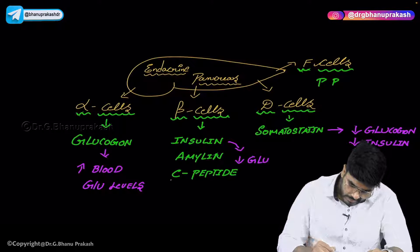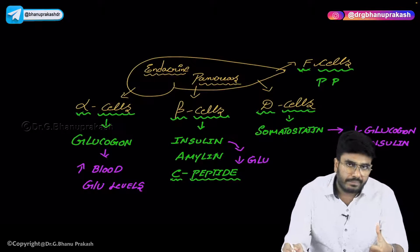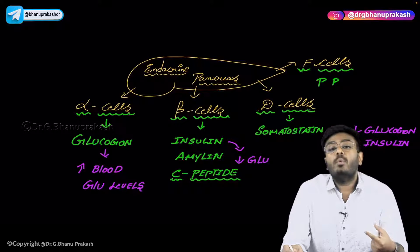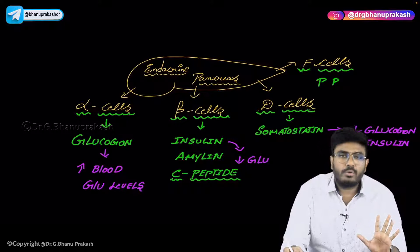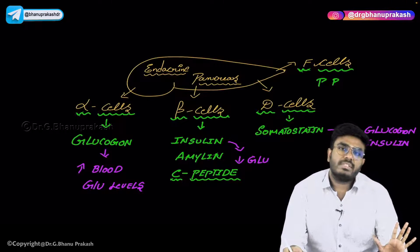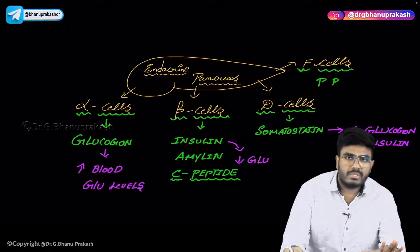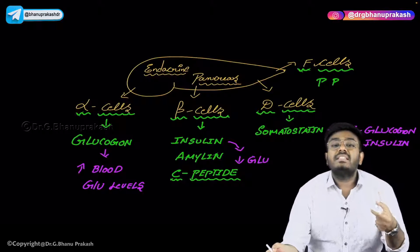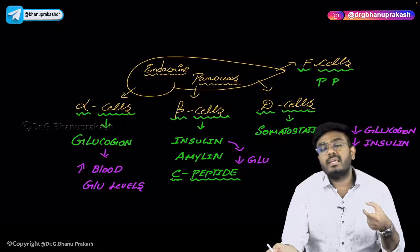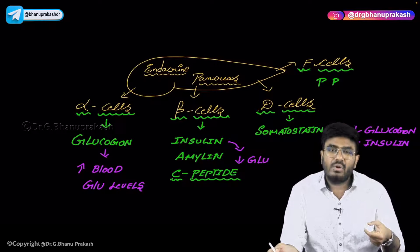One important point about C peptide: beta cells produce insulin and C peptide in equimolar concentration. For example, if 100 molecules of insulin are produced, the same 100 molecules of C peptide will be produced. If 1000 molecules of insulin are produced endogenously, 1000 molecules of C peptide will be produced, and this C peptide is lost in the urine. So by looking at C peptide in urine, we can estimate how much insulin is being produced inside the body — C peptide is an endogenous marker for insulin production.